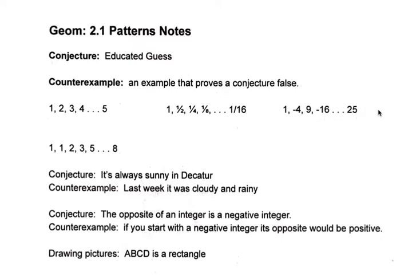The next one would be negative 36, which is 6 squared, following the negative-positive pattern. Our next sequence is actually called Fibonacci's number. You have a 1 and then a 1, then 2, 3, 5. Here's how you get the next one: 1 plus 1 is 2, 1 plus 2 is 3, 2 plus 3 is 5, 3 plus 5 is 8. And our next one, 5 plus 8, would be 13.